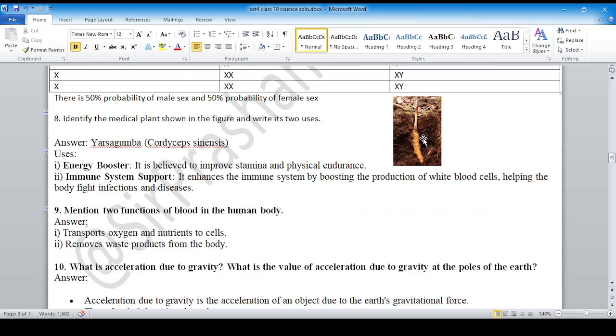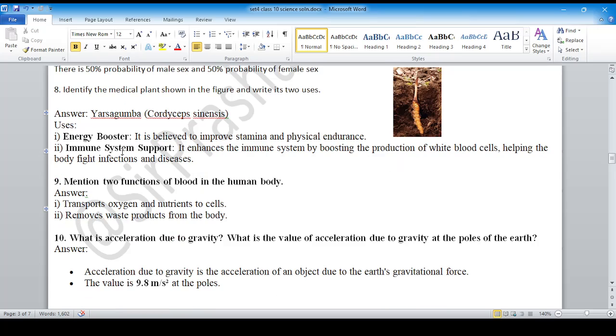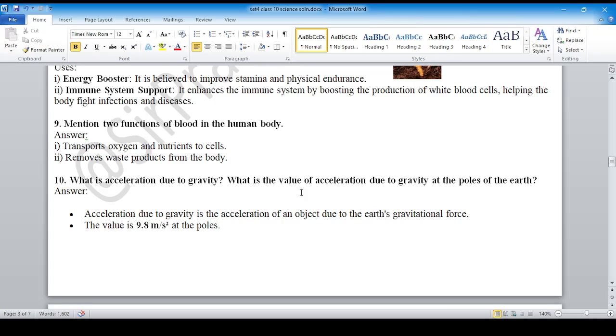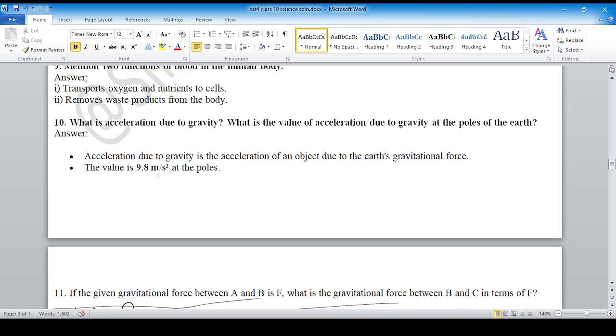Question 8: The scientific name is Cordyceps sinensis. It's an energy booster and immune system support. Question 9: Mention two functions of blood in the human body. Transport oxygen primarily, remove waste products, and supply nutrients to the whole body.